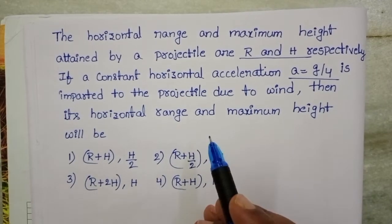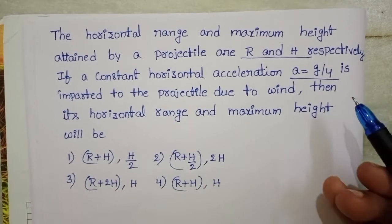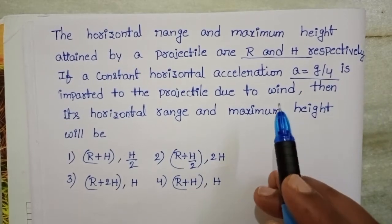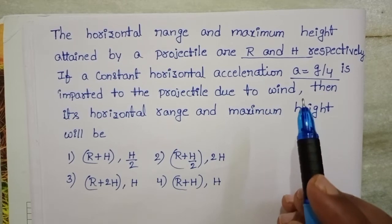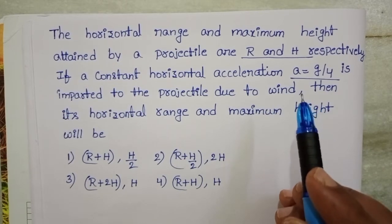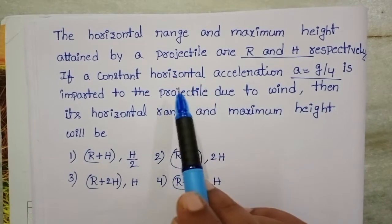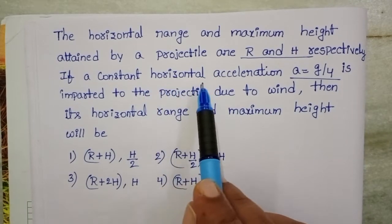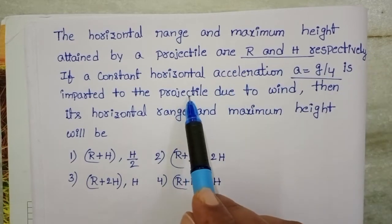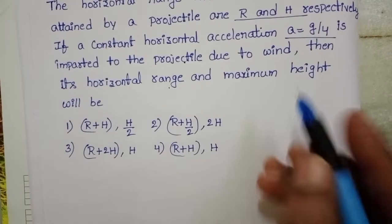Generally in projectile motion, our assumption is there is no acceleration along the horizontal direction — only acceleration acting along the vertical direction, that is, acceleration due to gravity. But in this question, a constant horizontal acceleration is imparted to the projectile.